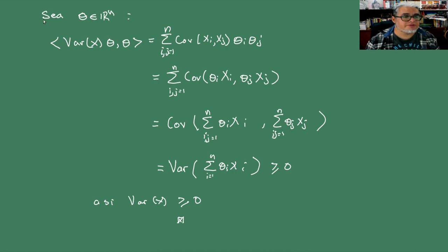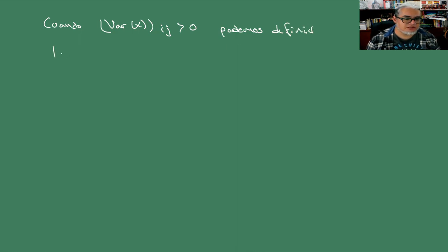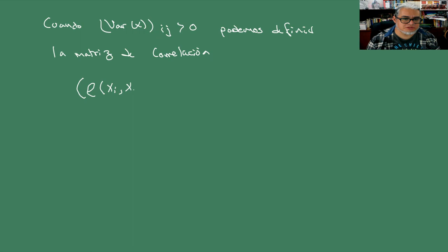Ahora, cuando la matriz de varianzas tiene elementos estrictamente positivos, podemos definir una matriz de correlaciones. La matriz de correlación es la que tiene en el elemento ij el coeficiente de correlación de xi con xj.